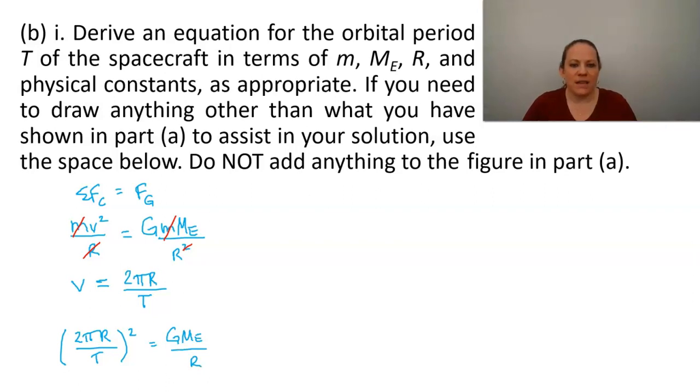So our next step here will be 4 pi squared r squared over T squared equals GmE over R. And we can solve that for T squared. We will have 4 pi squared r cubed over GmE. And finally, at last, T will be equal to the square root of 4 pi squared r cubed over GmE.